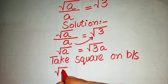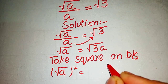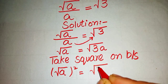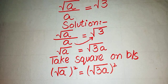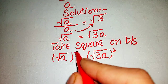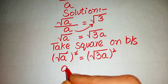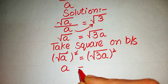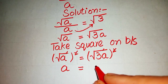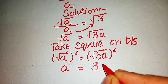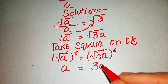Now we take the square of both sides: (√a)² = (√(3a))². The square root cancels with the square on the left, leaving a, and on the right side it becomes 3a.